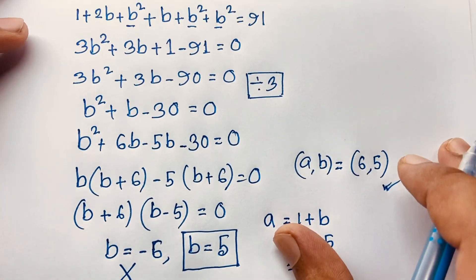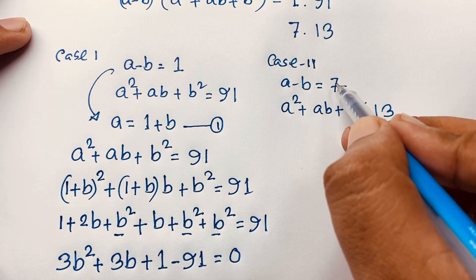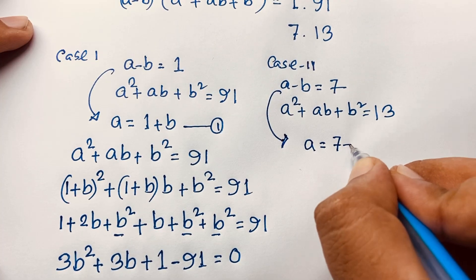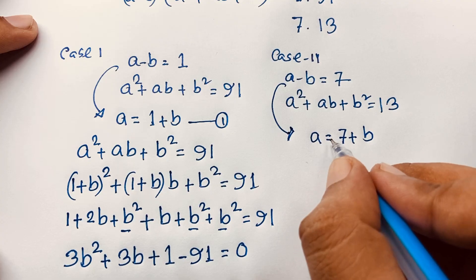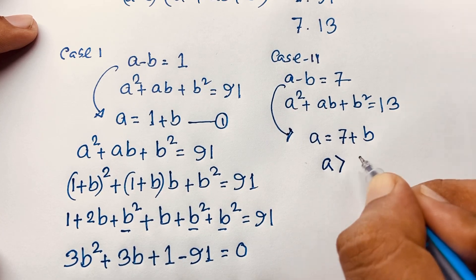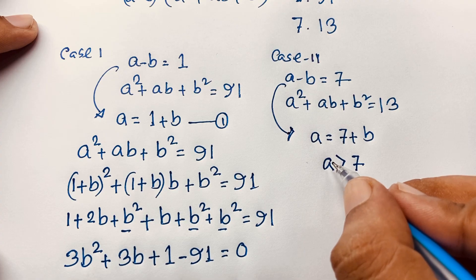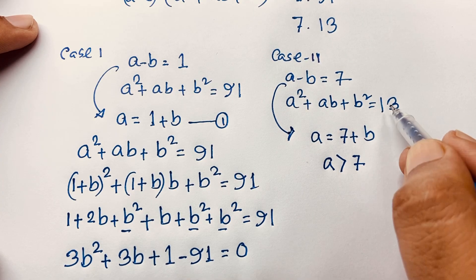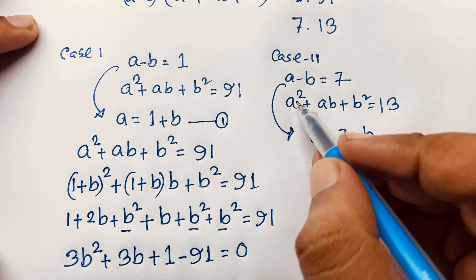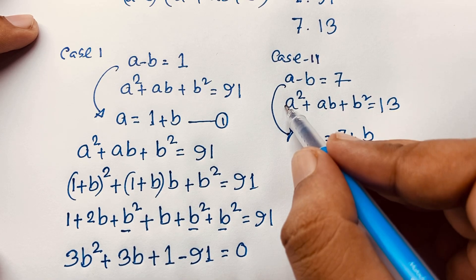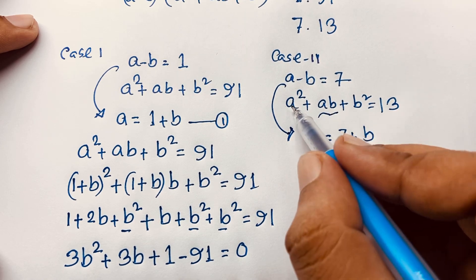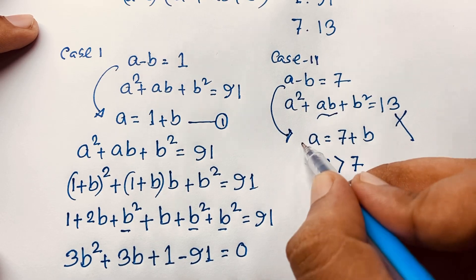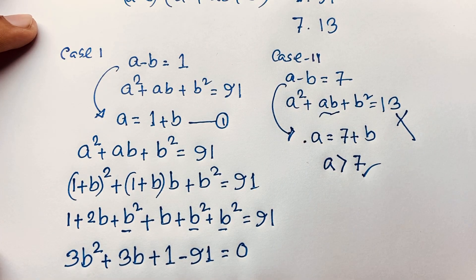For Case 2, a minus b equals 7 means a equals 7 plus b, so a is always greater than 7 — at least 8, 9, or 10. Therefore a² is greater than 49, which is already greater than 13. Since b² and ab are also positive, a² plus ab plus b² cannot equal 13. So Case 2 is not possible.